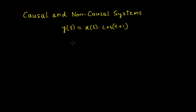So we'll consider this example. Say, for example, I want to find the value of the output y(t) at t = 1. Let me put t = 1 in that expression. So I get y(1) = x(1) · cos(2).